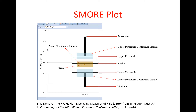Let me go to my PowerPoint and talk about Smore plots briefly. The Smore plot not only gives us information about the sample mean, but also about the maximum and minimum of our sample, the lower and upper percentile values, the median, and the confidence intervals over the lower percentile, mean value, and upper percentile. The Smore plot — or Simio-more plot — is based on a paper by Barry Nelson called 'The More Plot: Displaying Measures of Risk and Error for Simulation Output.'